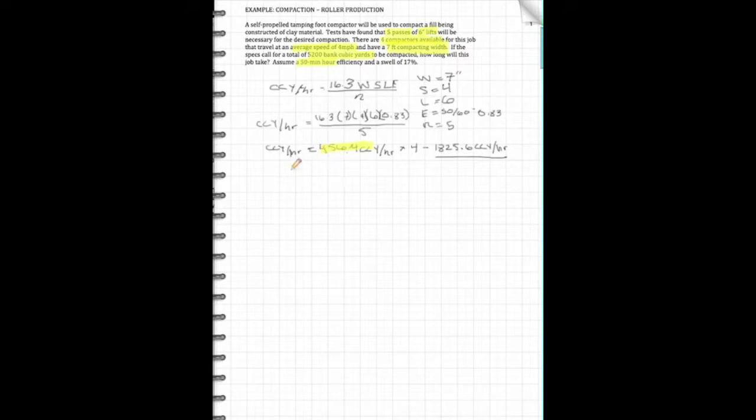What I'm going to show is going ahead and taking what we need to do, this 5,200 bank cubic yards, and we're going to convert that into compacted cubic yards and then just calculate from that. You can go the other way. You can convert this from compacted to bank and calculate the same way. But just to show something a little different, we're going to go this way. So you can do a conversion here, so that we have one compacted cubic yard, in this case because we have a swell of 17%, 1.17 in the bank state.